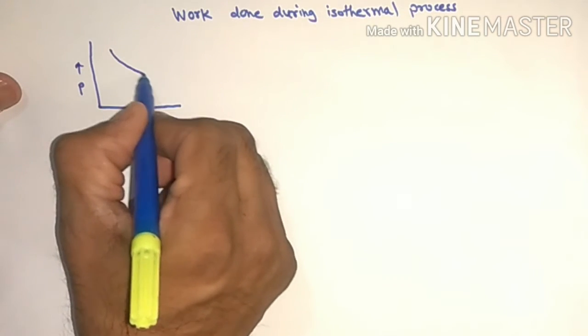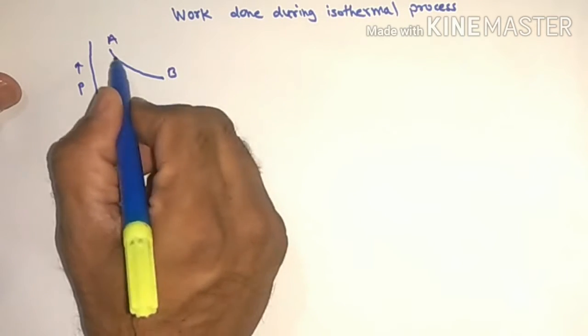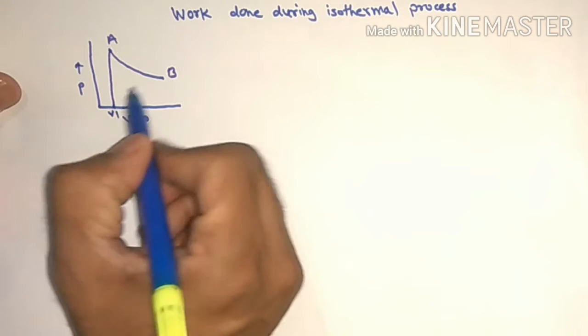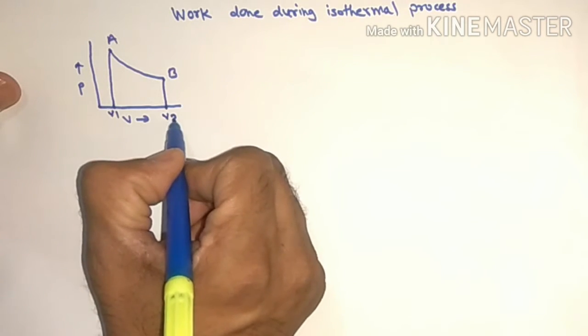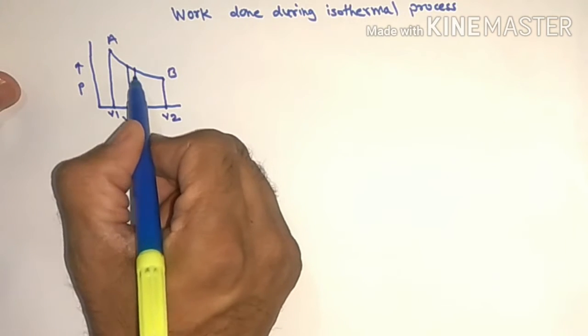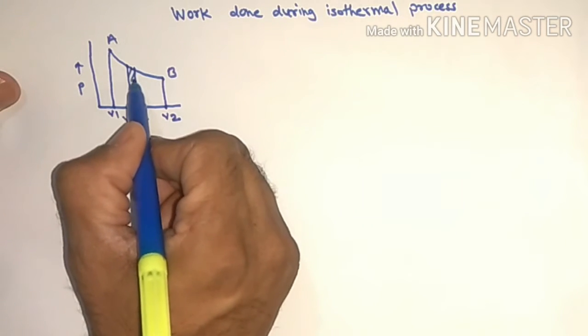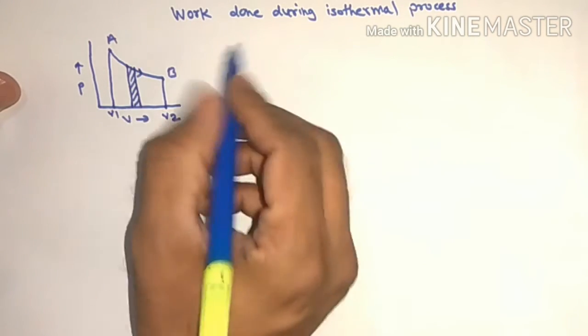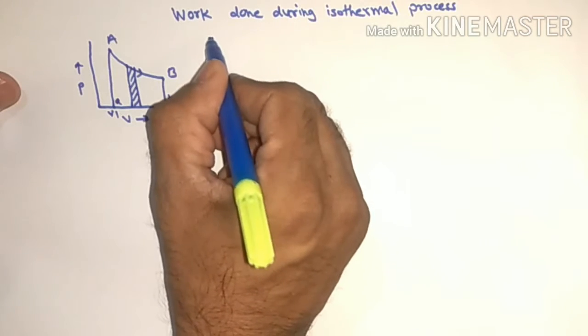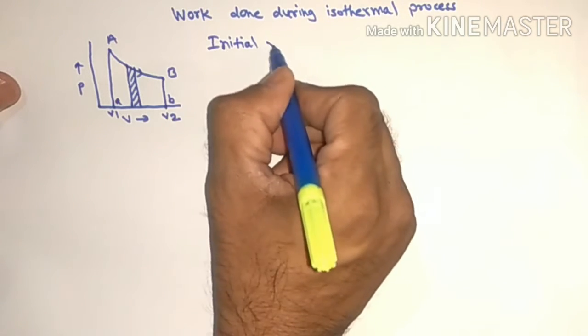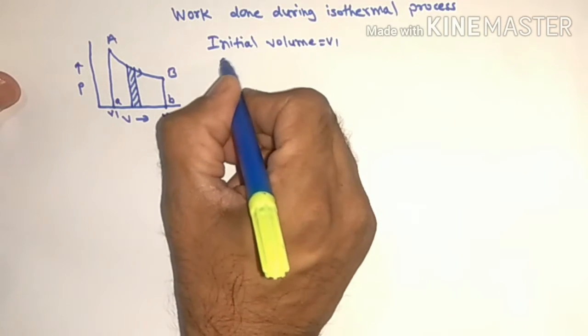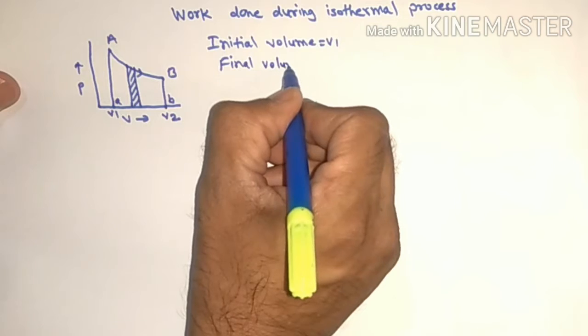AB is isotherm. Now here at point A volume is V1, at point B volume is V2. Take a small volume dV denoted by this stripe. Here A, here B, initial volume is V1, final volume is V2.